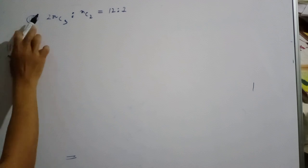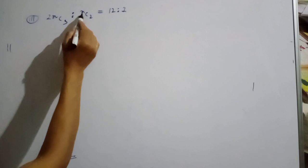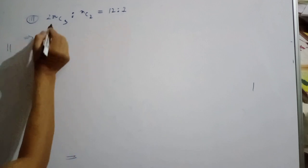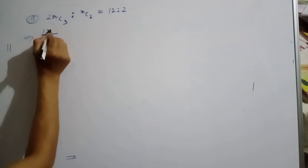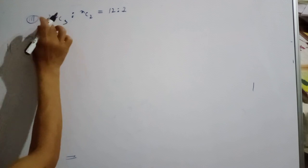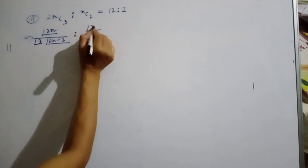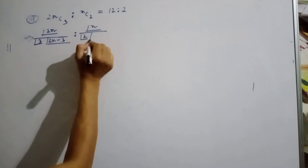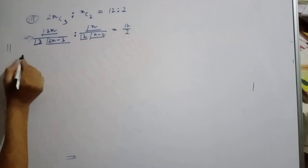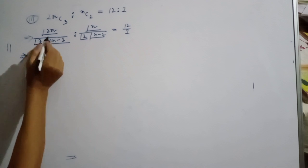Question number 3: 2nC3 is to nC2 equals 12 is to 1. Setting up using factorials: (2n)! over 3! (2n-3)! divided by n! over 2! (n-2)! equals 12 by 1.